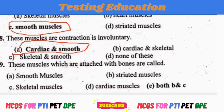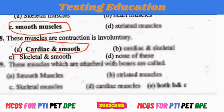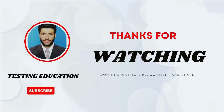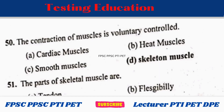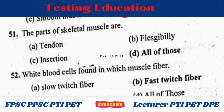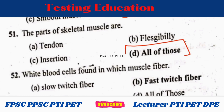The muscles which are attached to bone are called striated muscles and skeletal muscles. These are the two options. Contraction of skeletal muscles is voluntarily controlled. Out of skeletal muscles, the features are tendon, flexibility, insertion — all of these. So the correct answer is all of these.